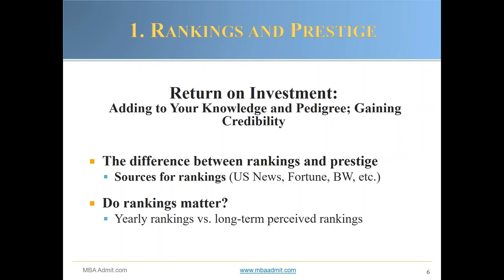Rankings are given out every year by organizations such as U.S. News and World Report, Fortune Magazine, and Business Week. Those rankings can have fluctuations from year to year. For example, Harvard Business School may be ranked number one in year one, then ranked number four two years out, and then number one again in year five. So the question would be, if it's ranked number four in one year, does that mean you shouldn't go there if you get both offers?